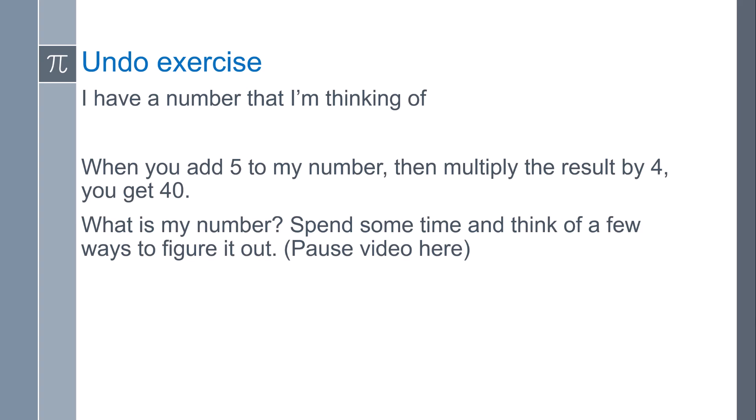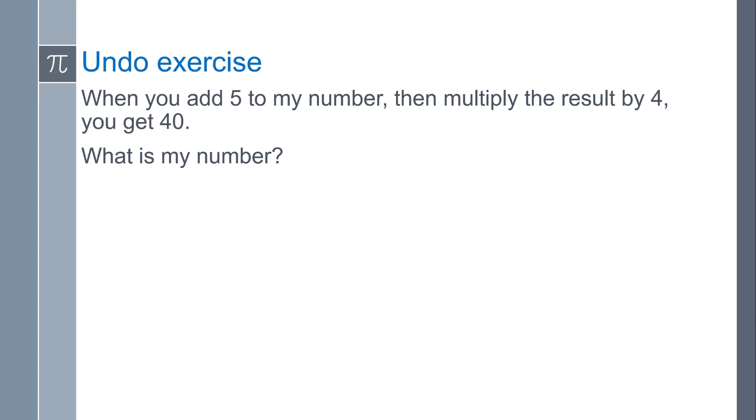You can go ahead and pause the video and think of a few ways to figure it out, but let's examine what I did. So I took that number and I added 5 to it. So here's my number, and I'm adding 5 to it. Then I take all of that and I multiply it by 4, and I get 40. Well, what is my number?